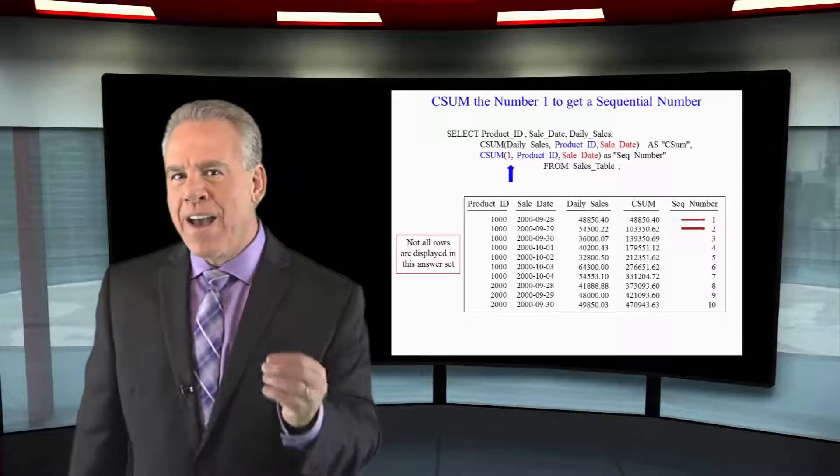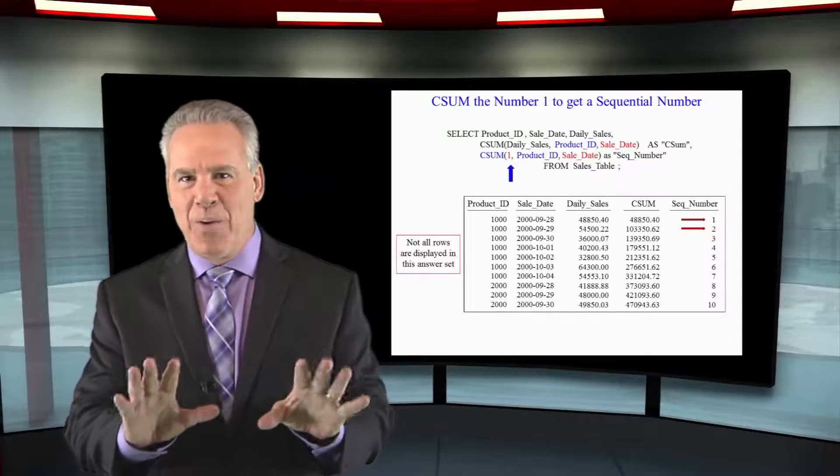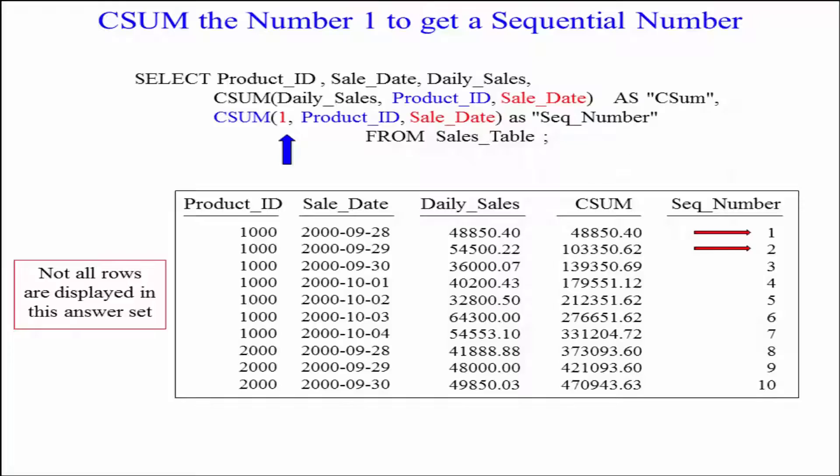I'm going to get five columns back on my report: Product ID, sale date, and daily sales.